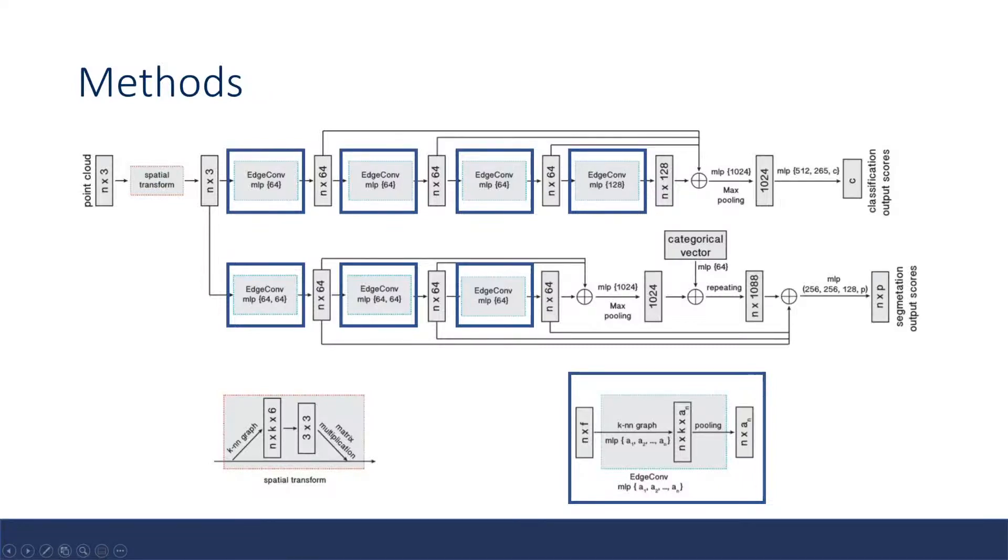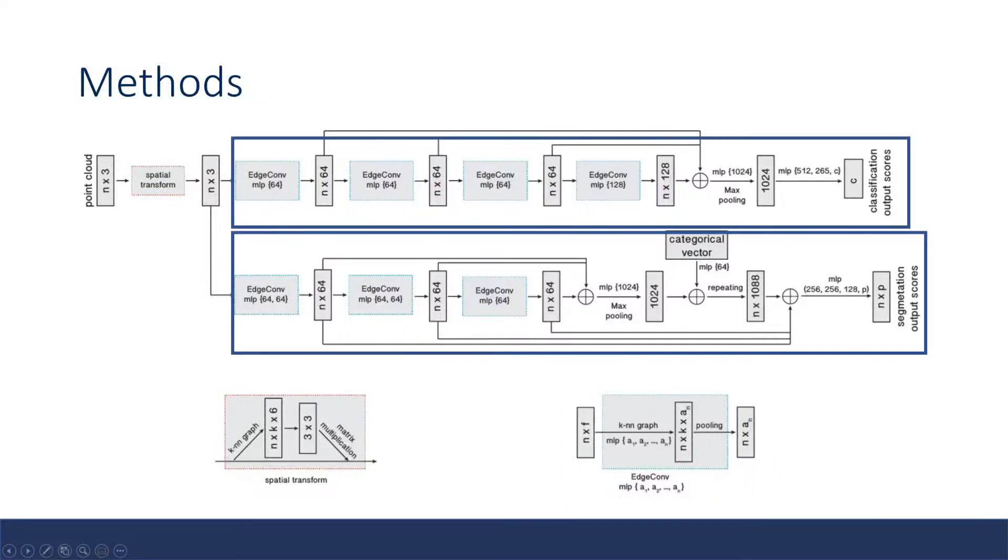The idea here is that in higher layers, semantically similar points will actually be closer in feature distance. Here they have two separate architectural branches: one designed for classification and another for segmentation. The main difference is the concatenation happens in different areas in both cases. For classification you output a single classification score, whereas for segmentation you have a per-point classification.